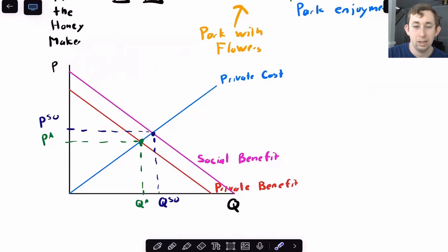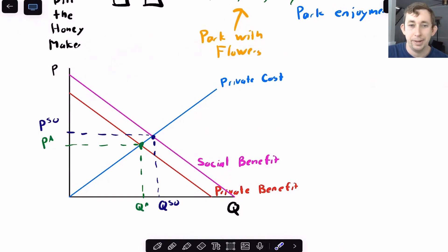because we want Bill to make more honey if it's going to make the flowers in the park flower better. And so if we want to make Bill make more honey, we're going to have to pay Bill more per jar of honey. So hopefully this makes sense. Again, leave a comment below if you're confused or if you're getting it.